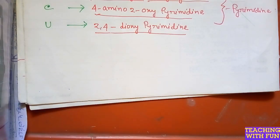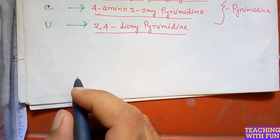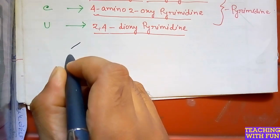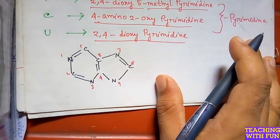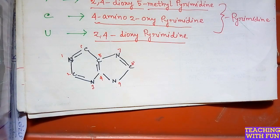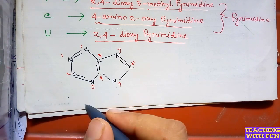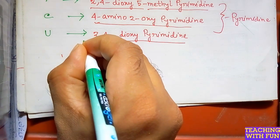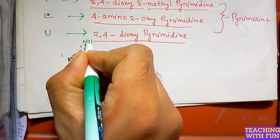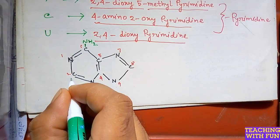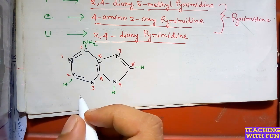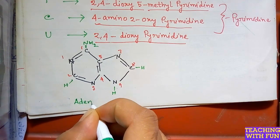Now we will show the structures of the nitrogen bases. First, adenine, which is 6-aminopurine. In the 6-position there is an amino group, NH2. The structure has hydrogen atoms attached accordingly. This is the structure of adenine.